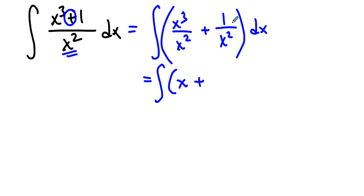And this is x to the negative 2. Which means we can use the power rule twice. We can use the power rule on this. Increase the power by 1 and divide by that new power. Increase the power by 1 and divide by that new power plus a constant.